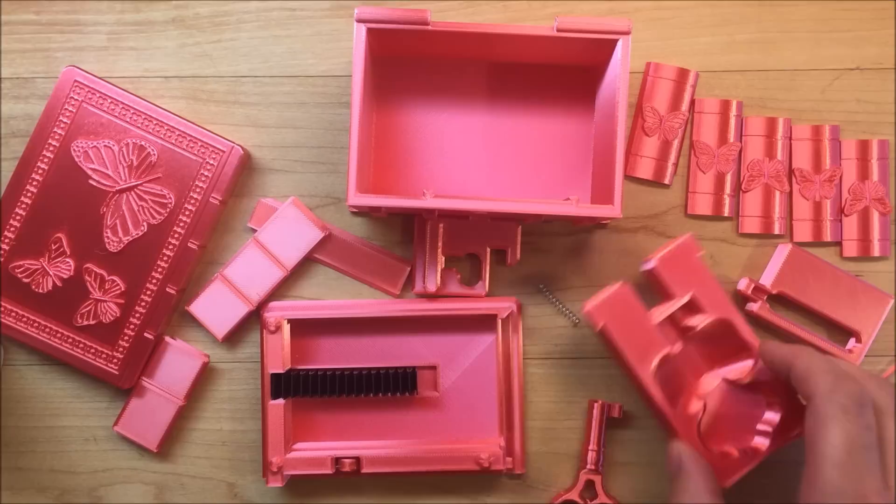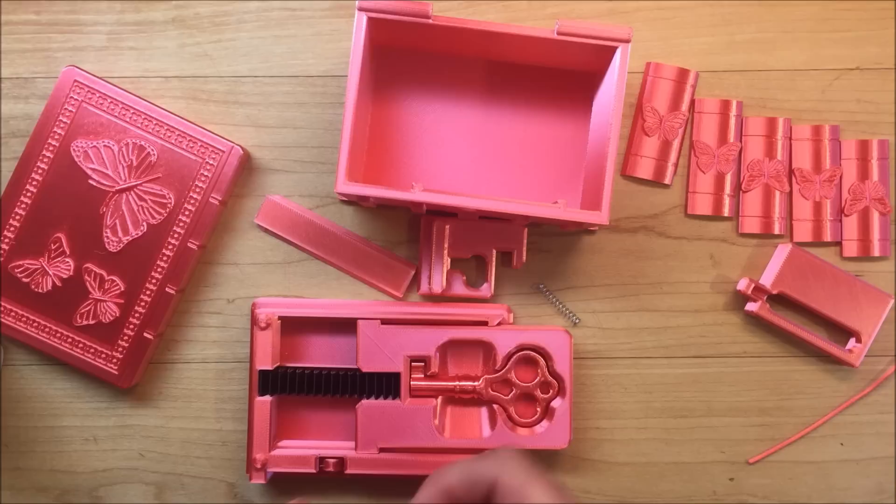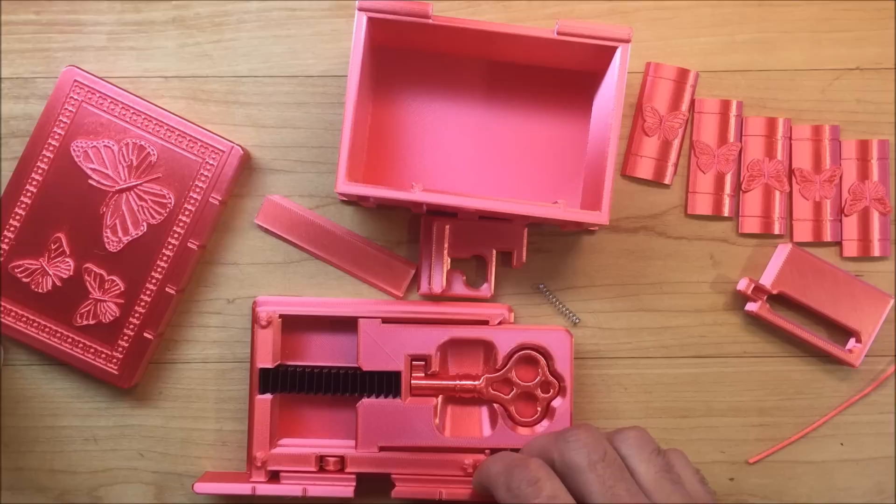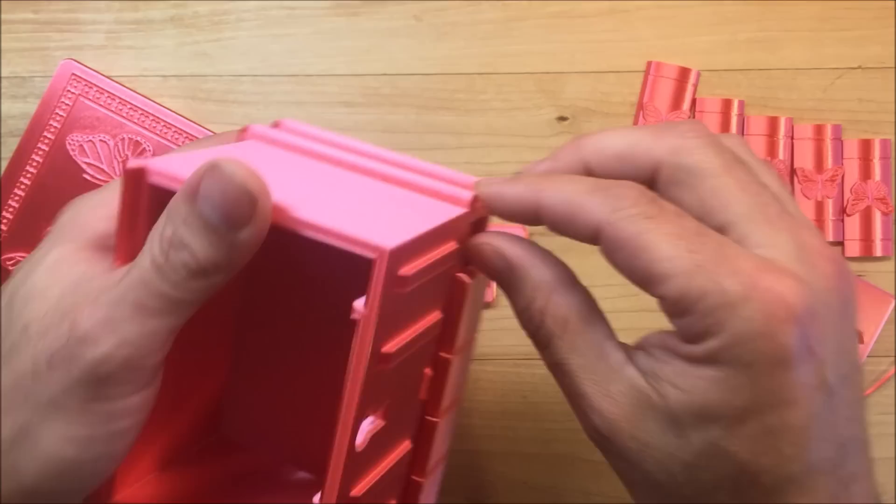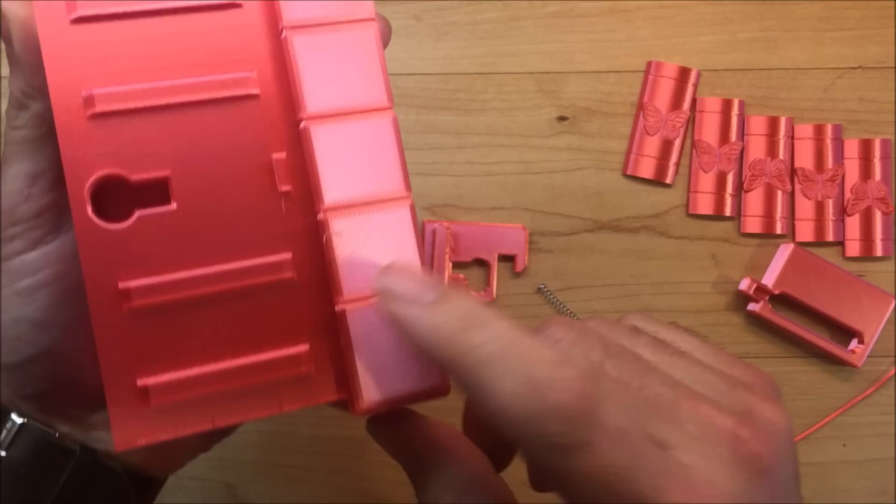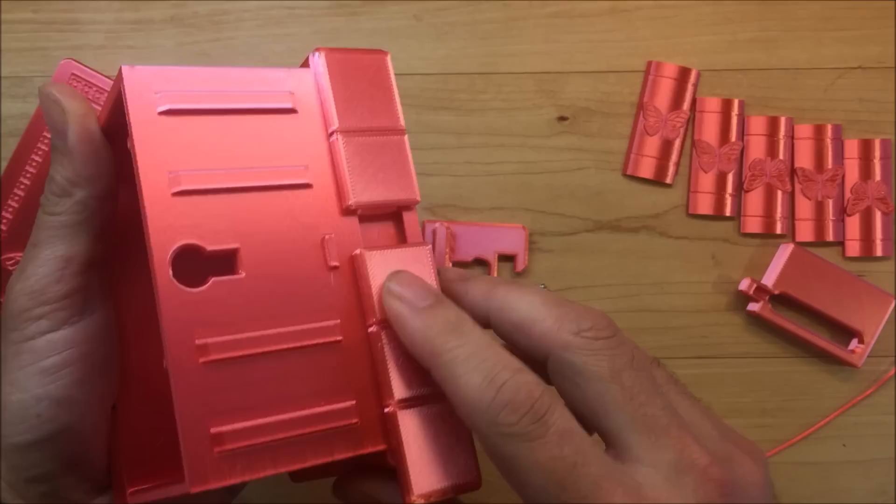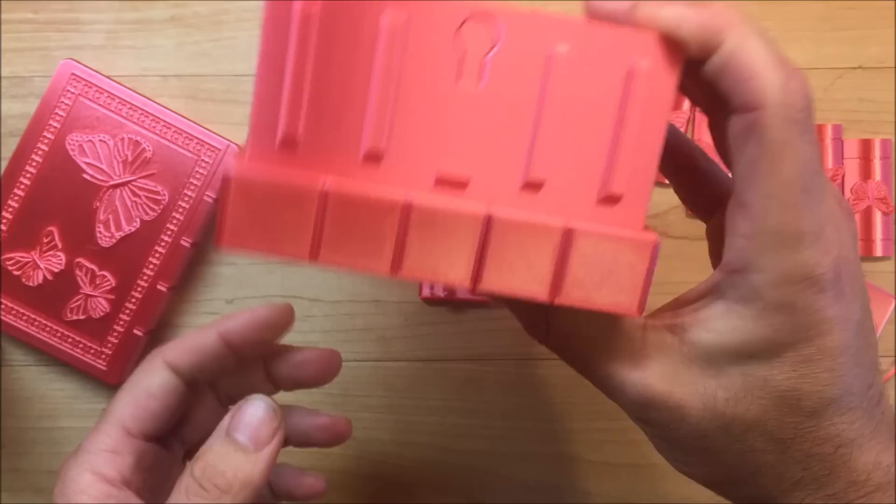Next you can start assembling the bottom. Once you get everything together, I want to slide and move everything to make sure that it operates correctly. You want to make sure that this tile here doesn't move and stays in place, because if this tile moves it's going to give away the secret of how to open the box.